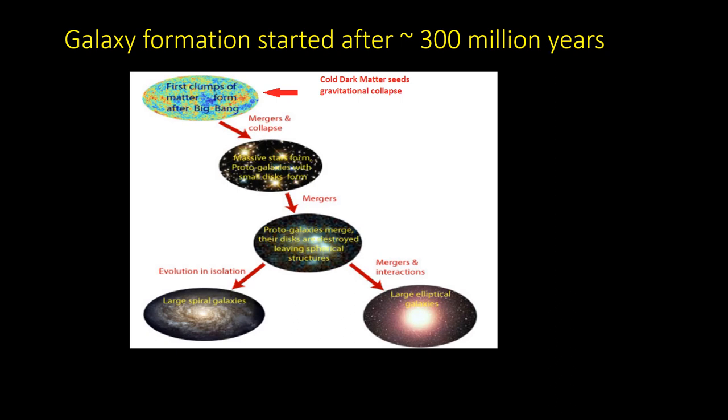It's still not fully understood how galaxies, many of which contain hundreds of billions of stars, form. One theory which has gained strength in recent years is the bottom-up theory. According to this, the first galaxies began to form when the universe was around 300 million years old, from lumps of matter including stars and gas clouds which had coalesced.